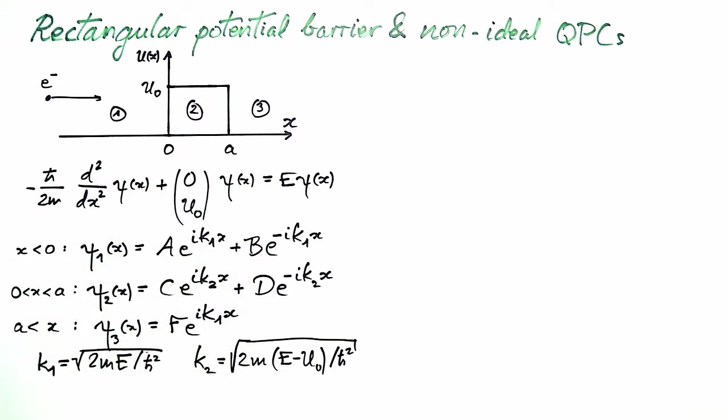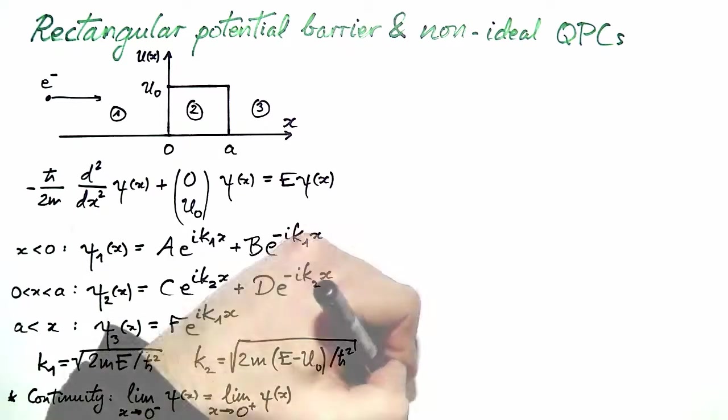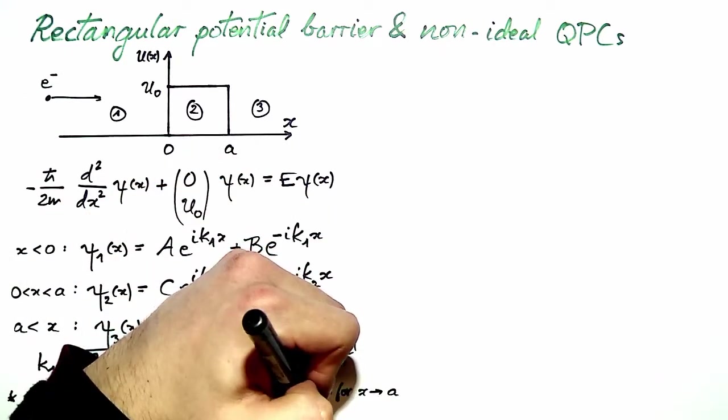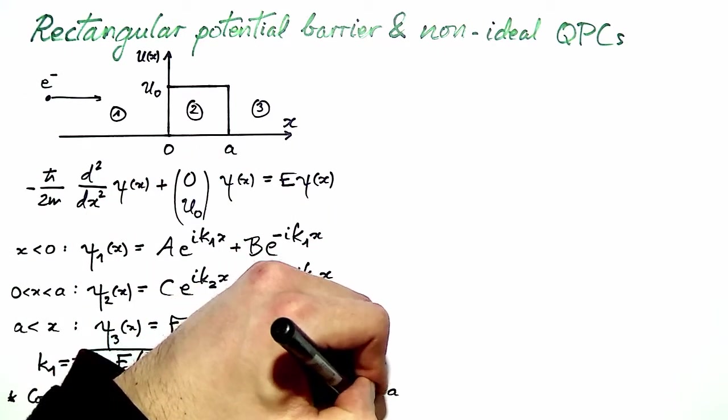We have a further condition that the wave function and its derivative are continuous. We obtain this, which also has to hold for x equal to a and for psi prime.